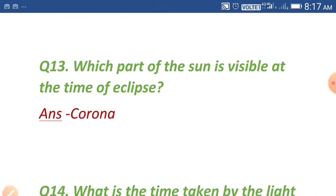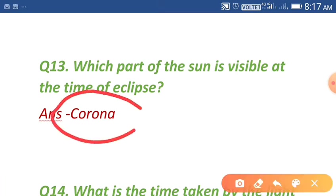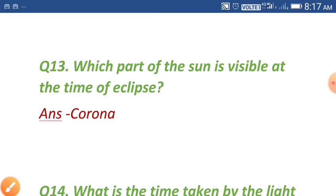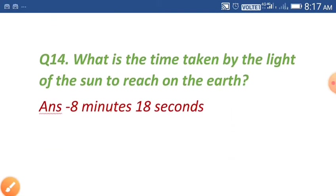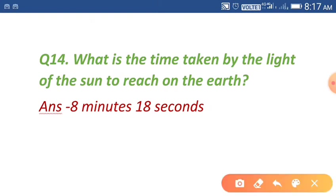Question number thirteen: which part of the sun is visible at the time of eclipse? Corona, because corona is the outermost layer of our sun. Question number fourteen: what is the time taken by the light of the sun to reach the earth? The answer is 8 minutes 18 seconds.